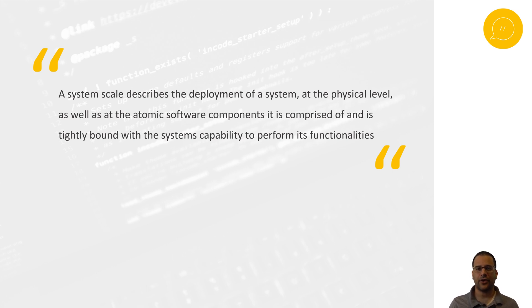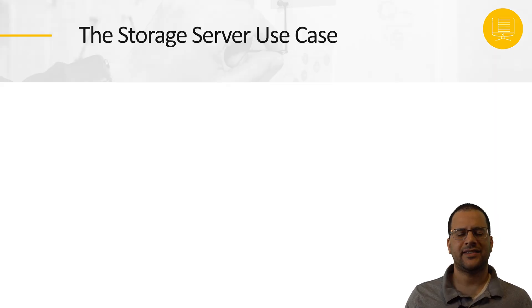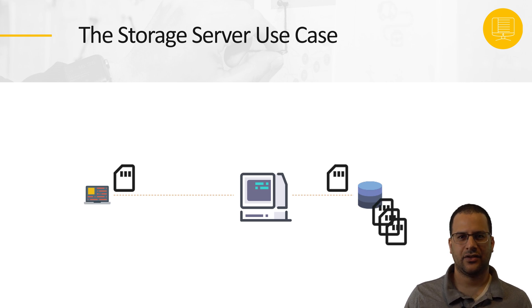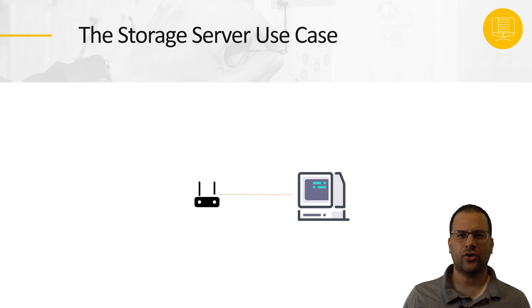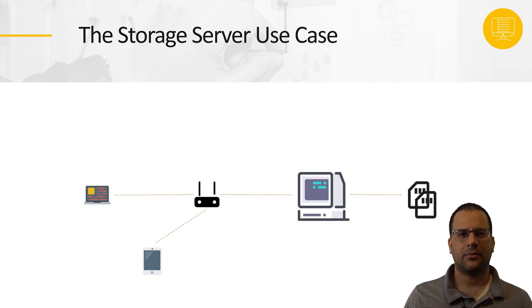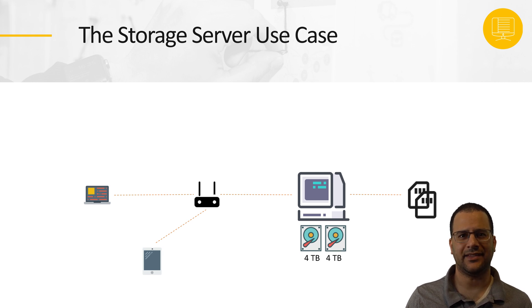Let's try to break down the definition with an example from real life. A storage server is a dedicated system process running mostly on a dedicated machine, and its purpose is to offer file storage services to connected clients. For example, I have a storage server connected to my home network switch, which allows me to access anything stored on it from any device connected to my home network. My storage server has two disks in it, each can store 4 terabytes of file data — together that makes a total of 8 terabytes.